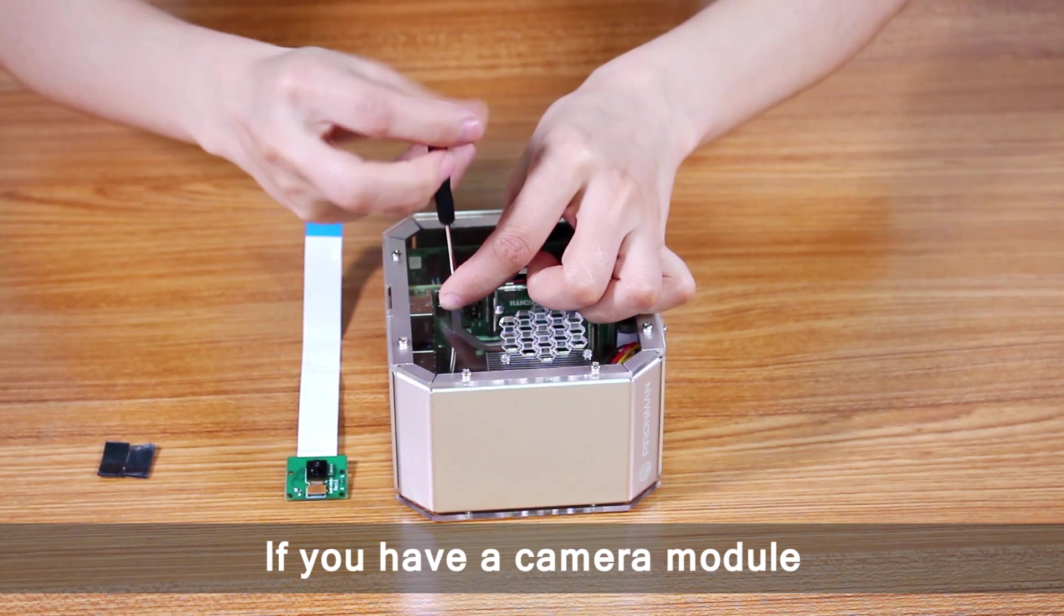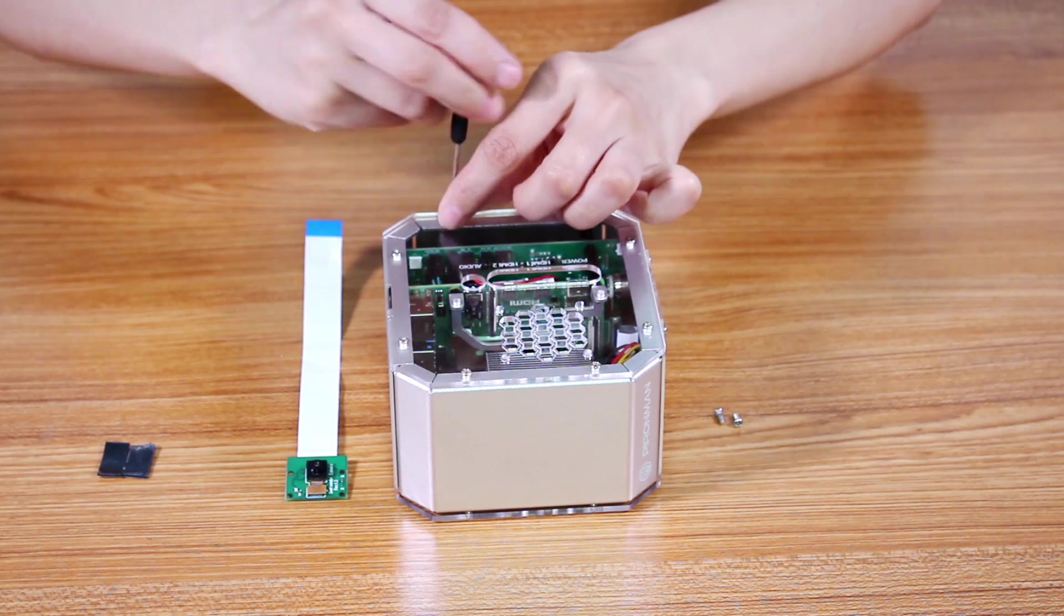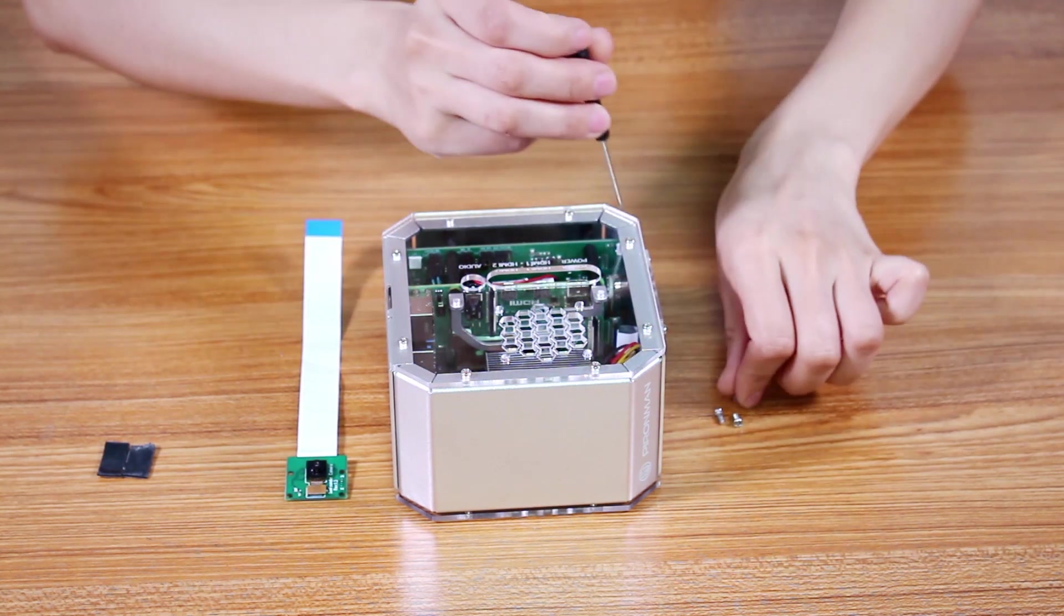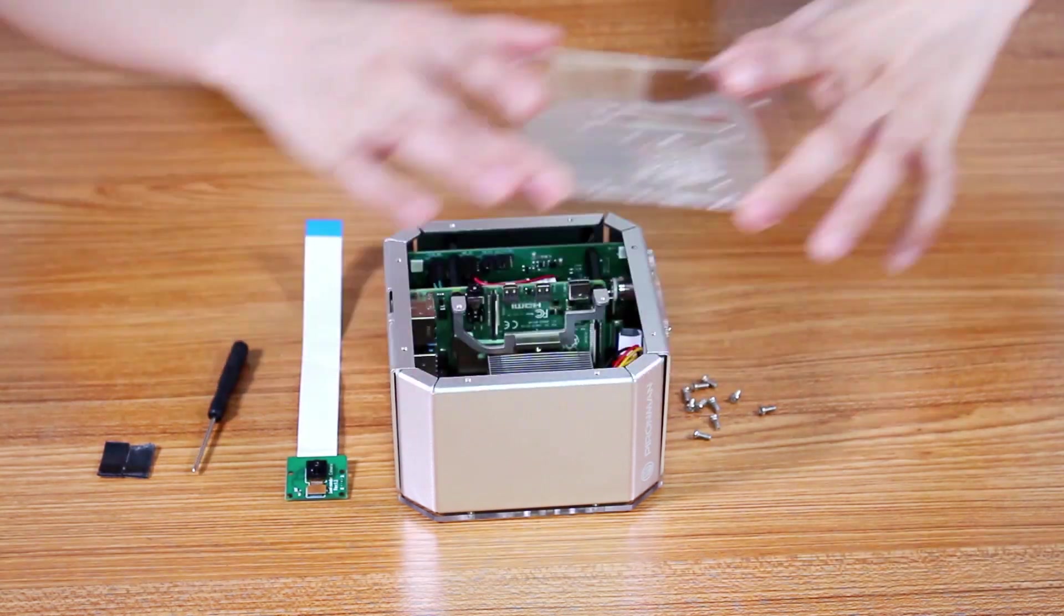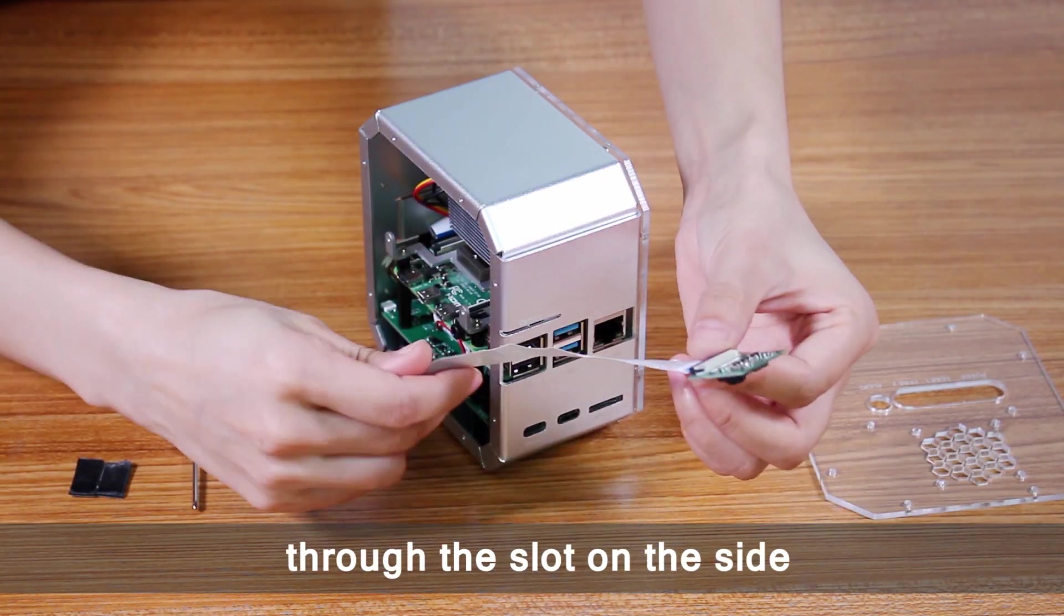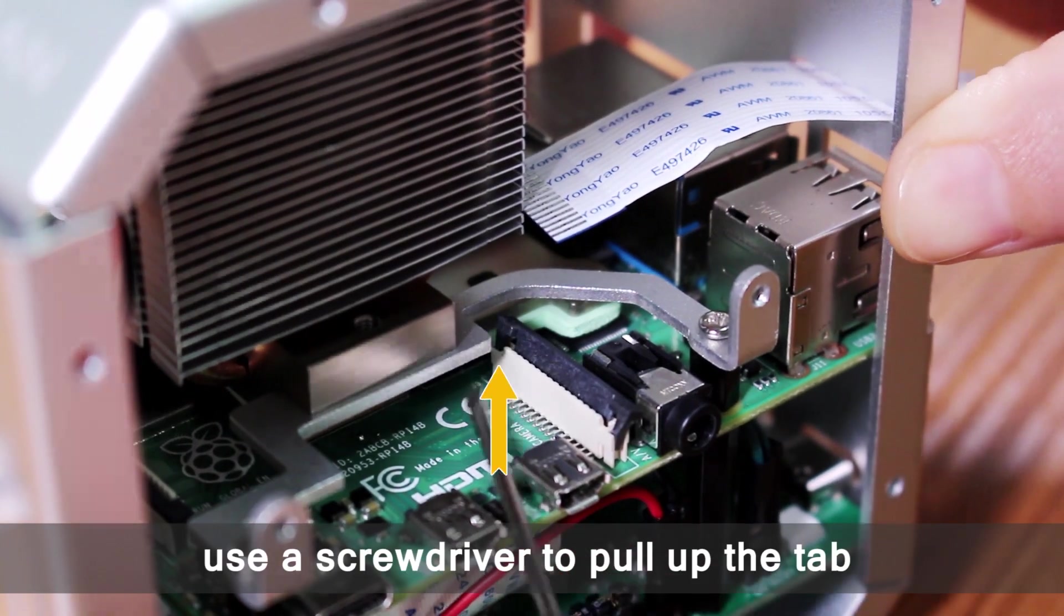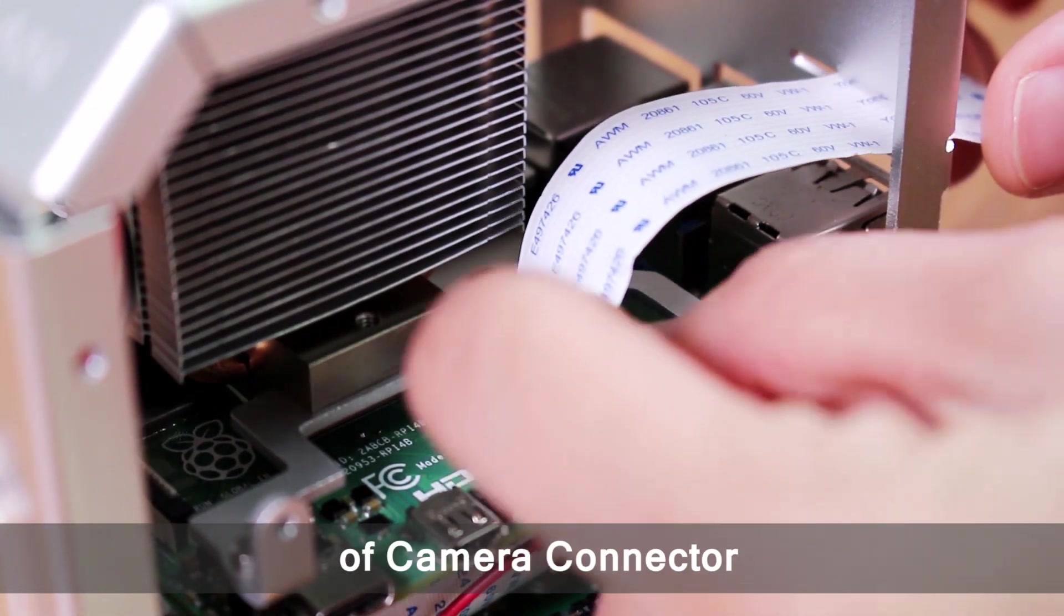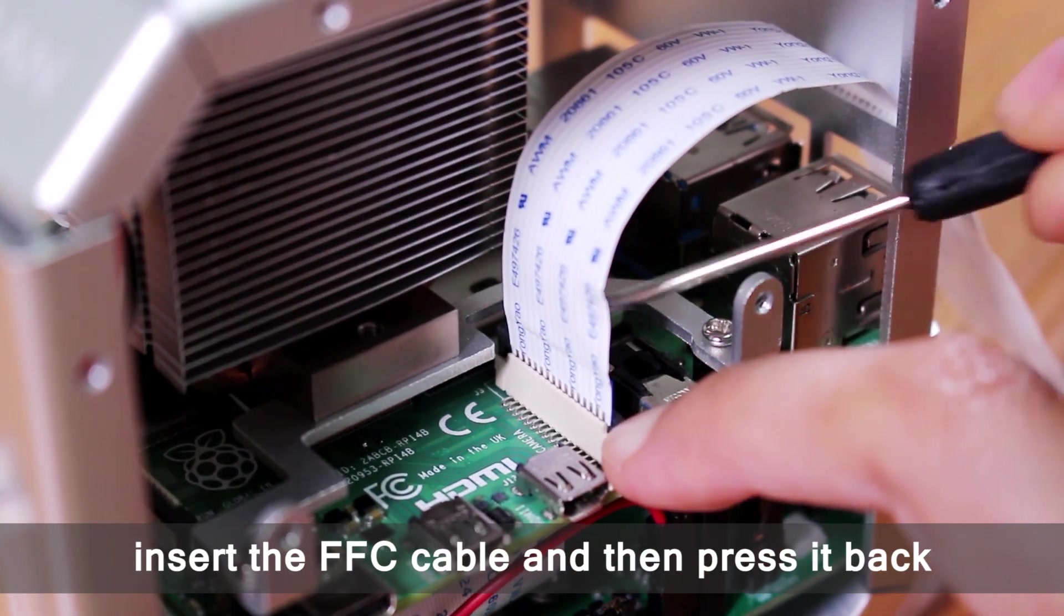If you have a camera module, the assembly tutorial is as follows. The first thing is to take off the acrylic plate. Thread the FFC cable through the slot on the side. After that, use a screwdriver to pull up the tab of camera connector. Insert the FFC cable and then press it back.